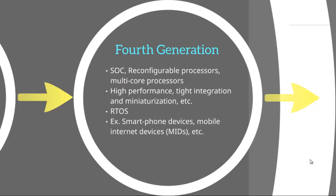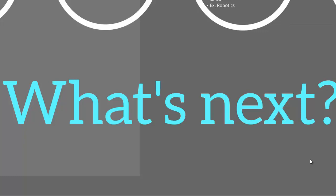Our present times represent the fourth generation of embedded systems. Now system-on-chip, reconfigurable processors, and multi-core processors are very common. These embedded systems have high performance and many peripherals are being integrated on the same chip, while the size is becoming smaller and smaller. The need of modern applications cannot be met without an RTOS now. Examples would be smartphone devices and mobile internet devices. Embedded systems are becoming more and more complex, trending towards or at least overlapping the general computing systems area — let's just wait and watch what happens next.